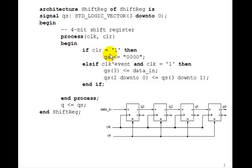If clear equals 1, we'll do the asynchronous clear, Qs is 0, 0, 0, 0. Else, on the rising edge of the clock,